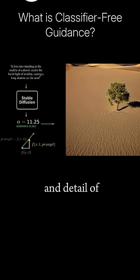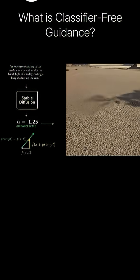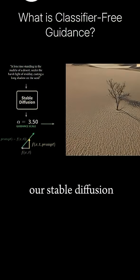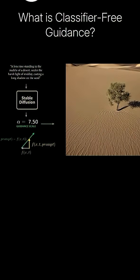And the size and detail of our tree improve as we increase our scaling factor alpha. As we use guidance to point our stable diffusion model's vector field more in the direction of our prompt, our tree literally grows in size and detail in our images.